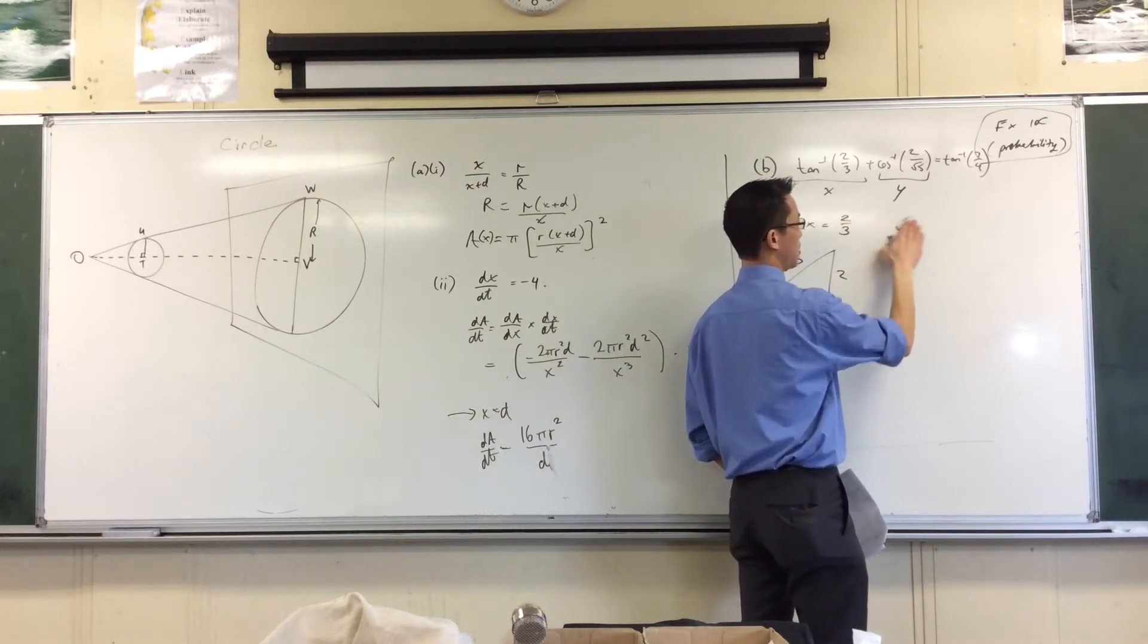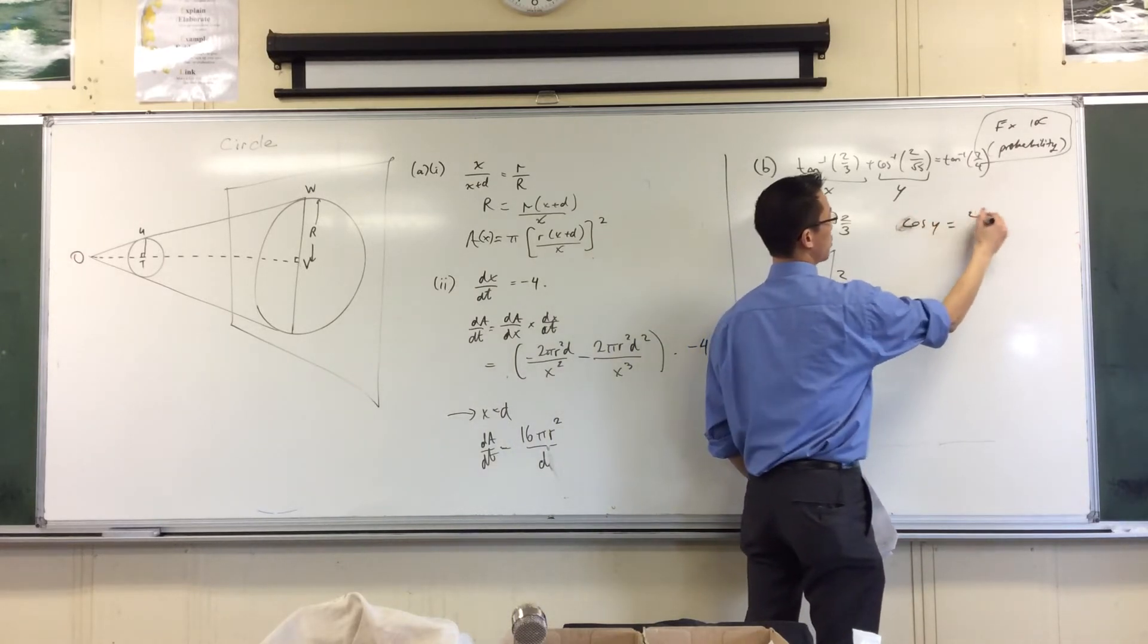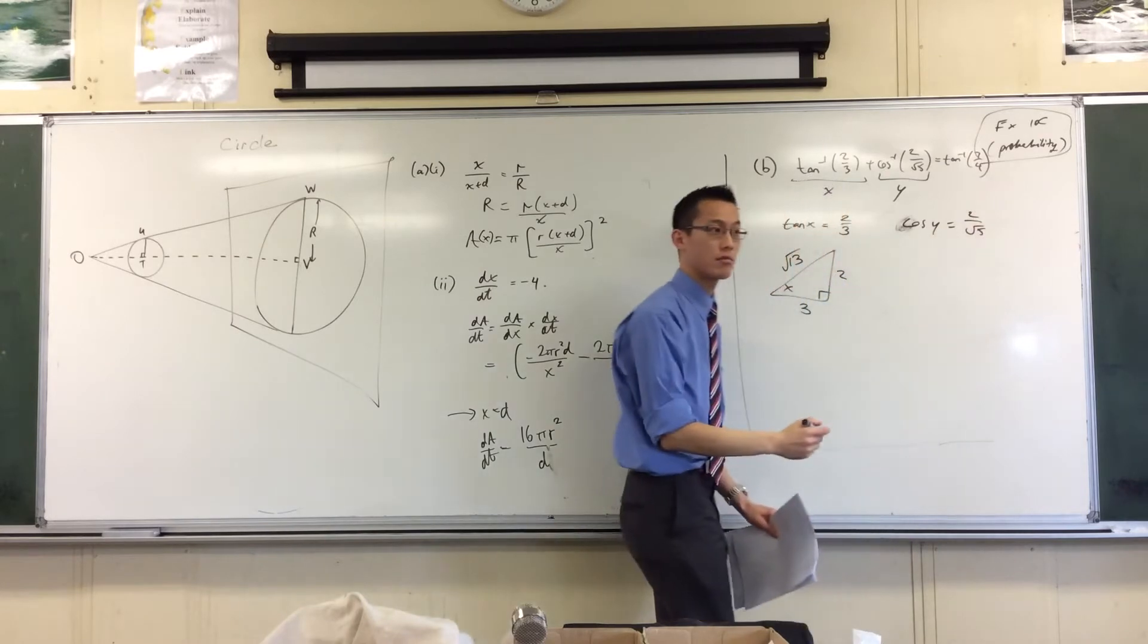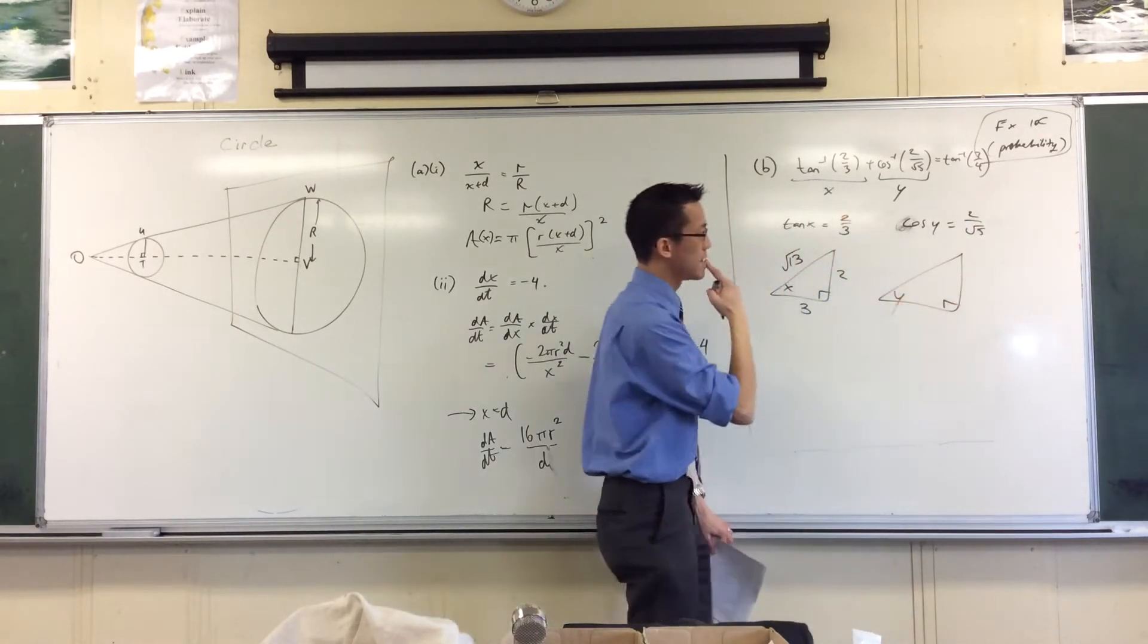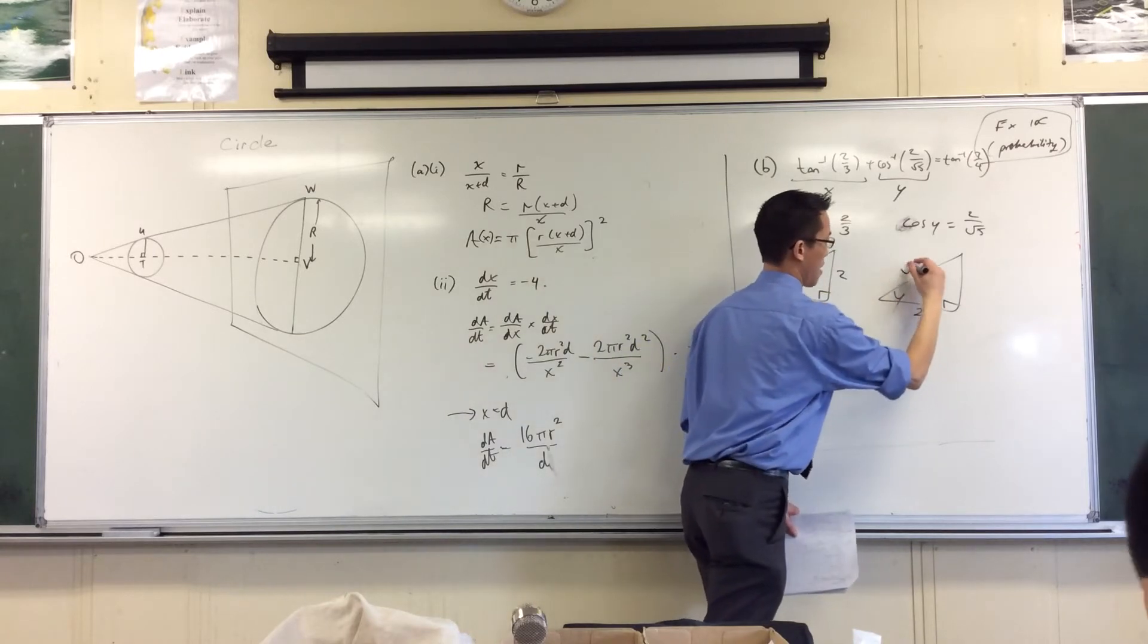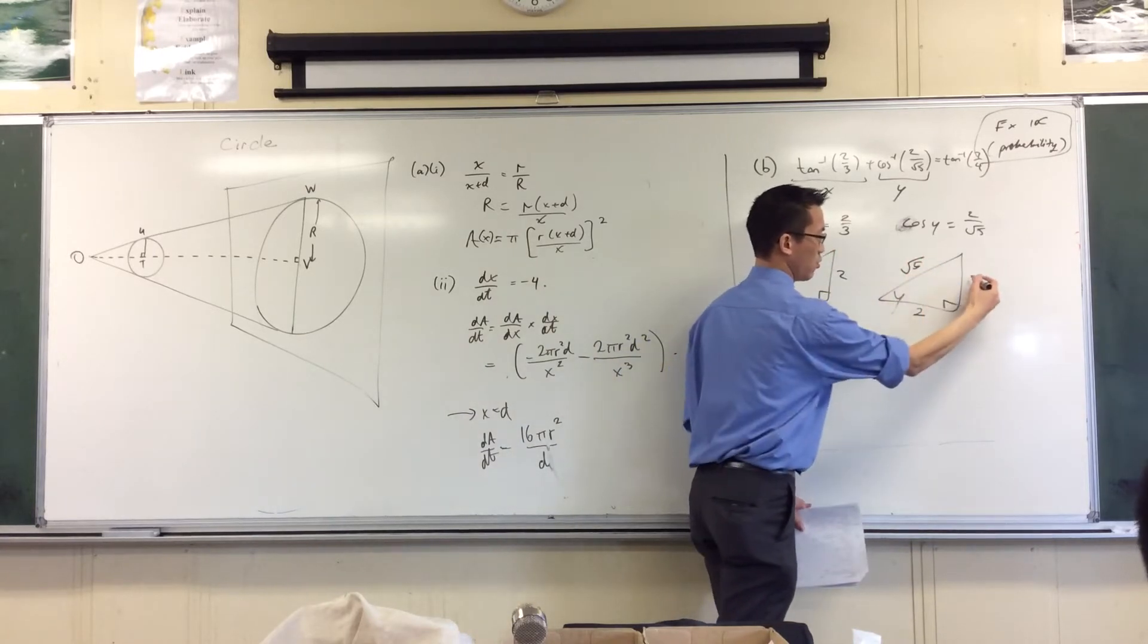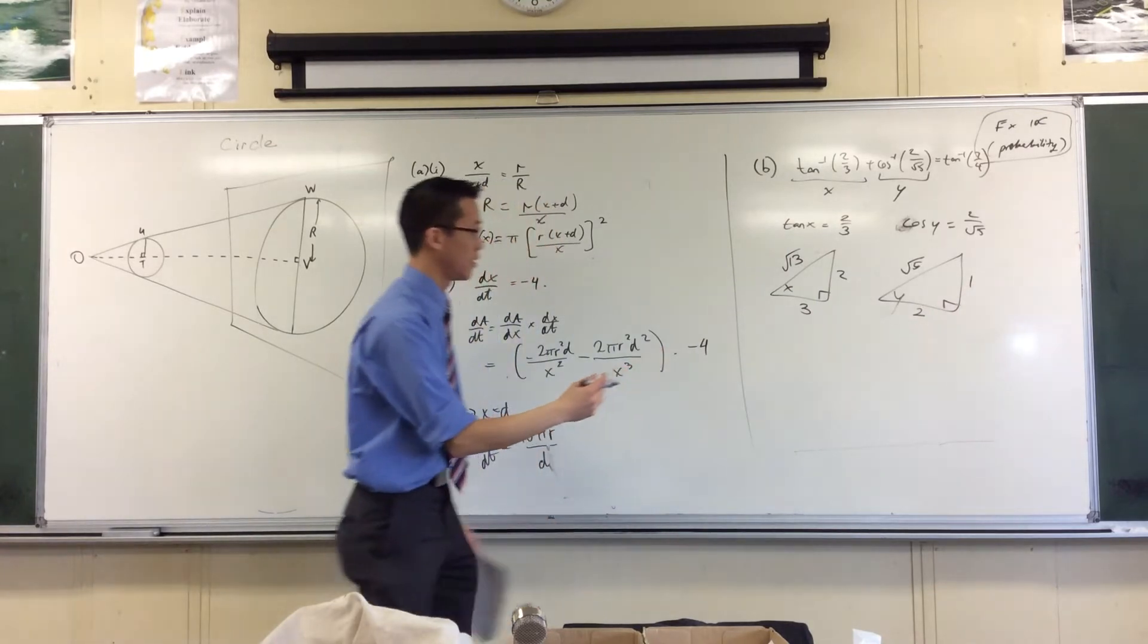And then over here, I can say, well oops, sorry, not tan, cos y is equal to 2 on root 5. So you've got your triangle, you stick y over here, so adjacent on hypotenuse, which gives you 1 over there, yes.